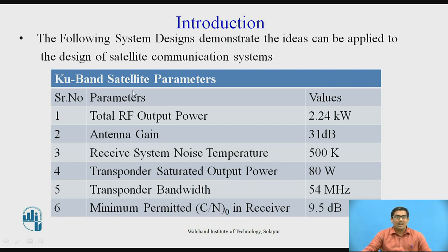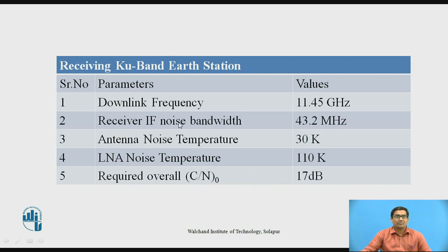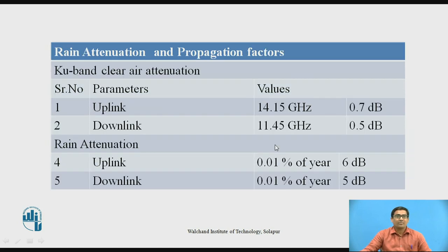This table shows KU band satellite parameters. For the design of a satellite, we require KU band parameters. Whenever we design a satellite, we require uplink as well as downlink parameters. This is a transmitting KU band earth station — this table shows the different parameters and their values. This table shows the receiving KU band earth station and its parameters. For designing a satellite system, we also require rain attenuation and propagation factors, shown for both uplink and downlink in this table.